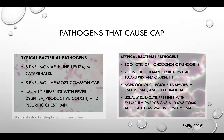Typical bacterial pathogens include Strep pneumo, H. influenzae, and M. catarrhalis. Strep pneumo is still the most common bacterial agent responsible for CAP. S. aureus has not been considered a typical cause of CAP in people who are healthy. Rather, it is well-known to cause severe CAP after an influenza infection.